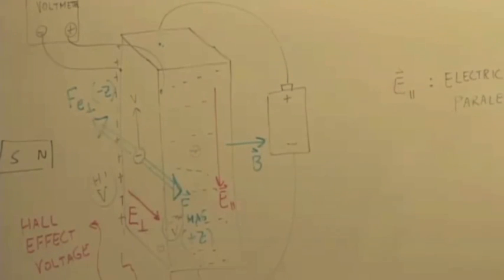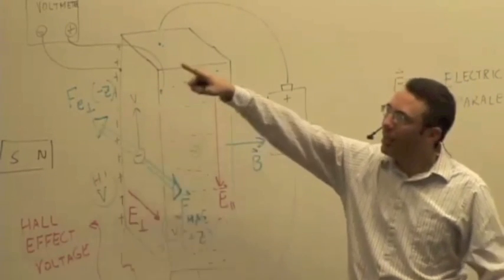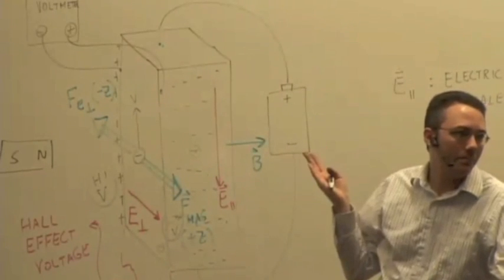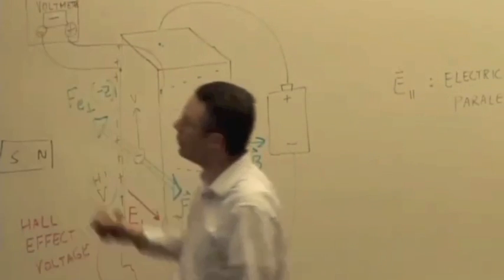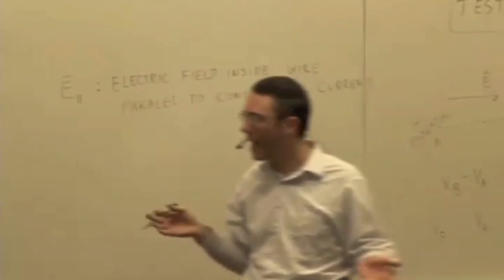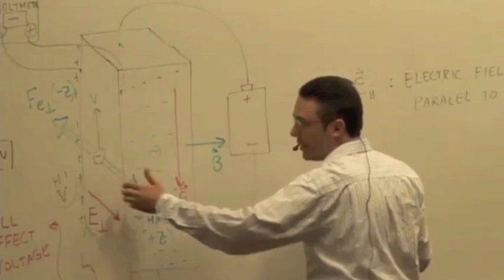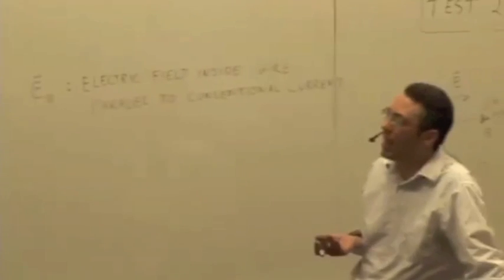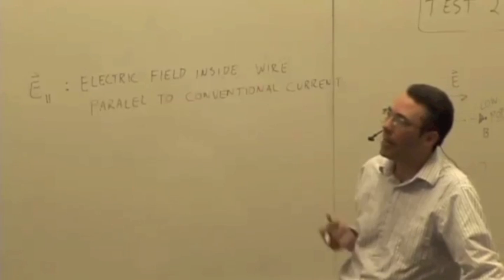We've connected the voltmeter's positive terminal to the lower potential. But the rule is it will read positive if it's connected to the higher potential. So it's got to read negative. We're going to get a negative reading on the voltmeter. So the first thing you have to do is figure out the direction of the electric field — this E perpendicular — use that to determine the higher or lower potential, and keep in mind that the voltmeter reads positive if it's connected to a higher potential. If it's not, it will read negative.